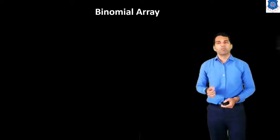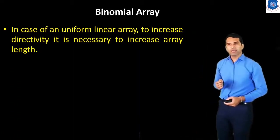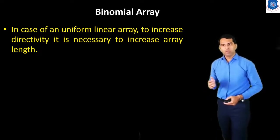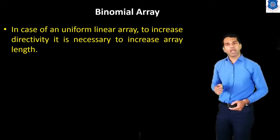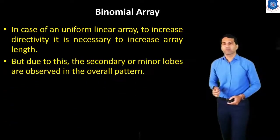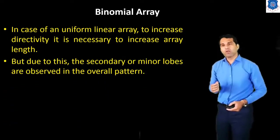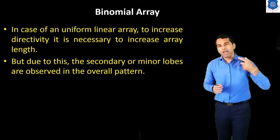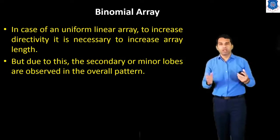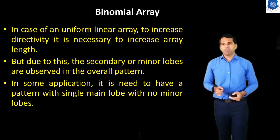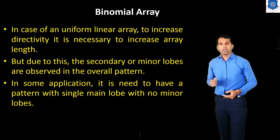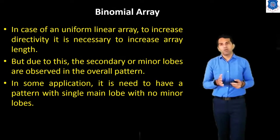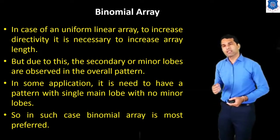Now we discuss the binomial array. In a uniform linear array, to increase directivity it is necessary to increase the array length by increasing the number of elements N. However, due to this, secondary or minor lobes appear in the overall radiation pattern. In some applications, it is necessary to have a pattern with a single main lobe and no minor lobes. In such cases, the binomial array is most preferred.